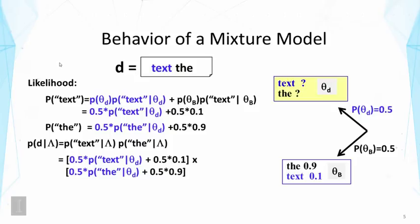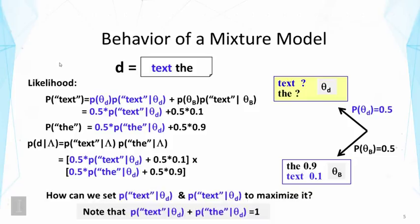Now, the interesting question now is, how can we then optimize this likelihood? Well, you will notice that there are only two variables. There are precisely the two probabilities of the two words, text and the, given by theta sub d. And this is because we have assumed that all the other parameters are known.